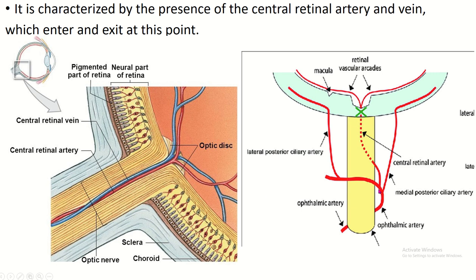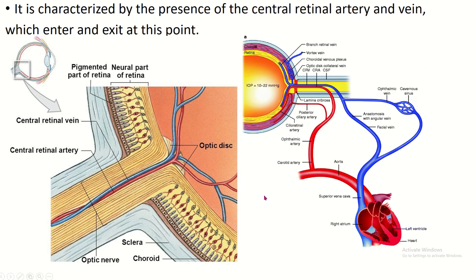The ophthalmic artery gives off the central retinal artery, which enters within the retina through the optic cup and optic disc and radiates to supply other parts of the retina. The retinal venous blood drains and passes through the optic disc, optic cup, then the optic nerve, and drains into the facial vein, ophthalmic vein, and cavernous sinus, ultimately draining into the superior vena cava.